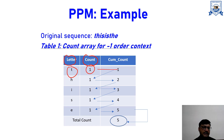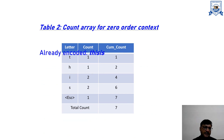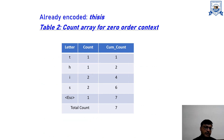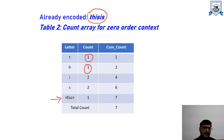Similarly, we create the count array for zero order context. The difference here is that we consider whatever has already been encoded in the sequence. We also include the escape symbol in this table. The count of T is 1, H is 1, I is 2, and S is 2. We find the cumulative count the same way. Remember, for the escape symbol we always take the count as 1, regardless of whether it is a first order, second order, or zero order table.